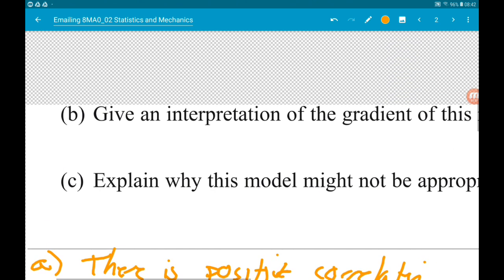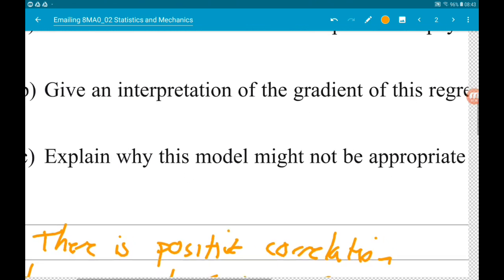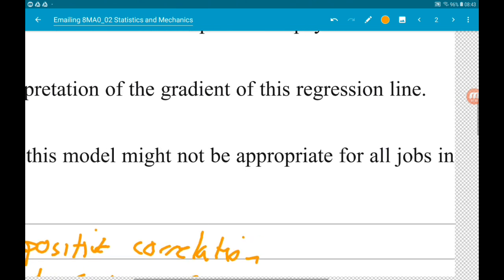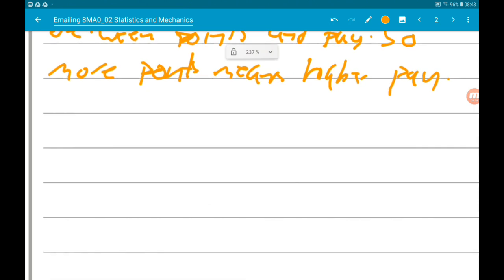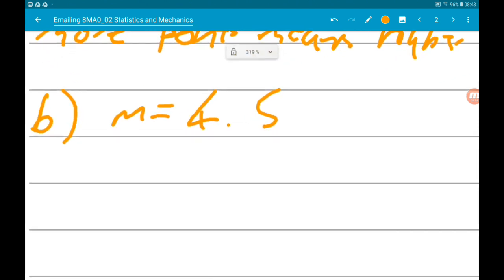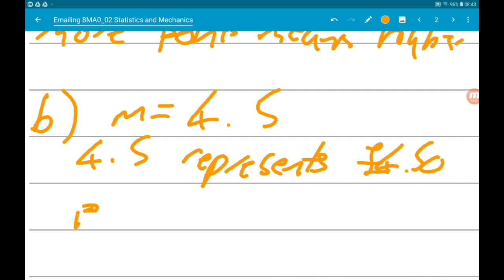Part B asks us to give an interpretation of the gradient of this regression line. So again the gradient is 4.5. This means that for each point awarded X, that 4.5 would be 4.50. So 4.5 represents £4.50 per point.